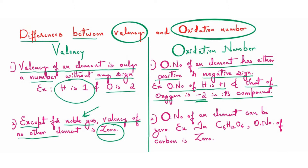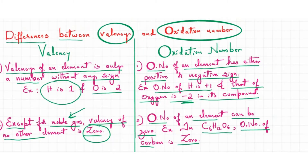With respect to oxidation number, the second difference is that oxidation number of an element can be zero. For example, in C₆H₁₂O₆, which is nothing but glucose, an organic compound, the oxidation number of carbon is zero. Now let us try to calculate how this oxidation state of carbon is zero.